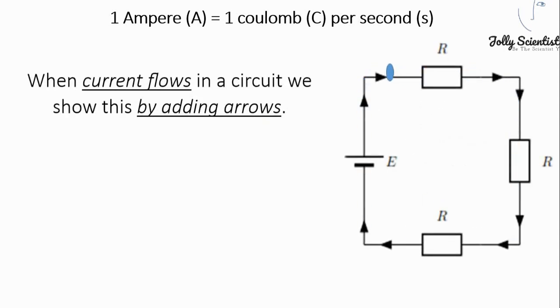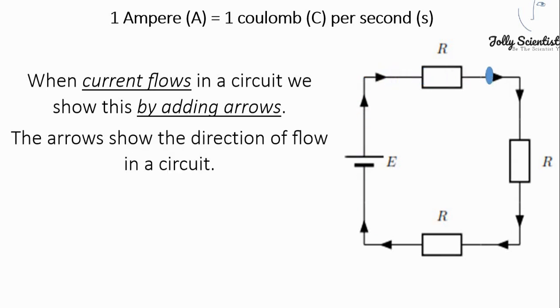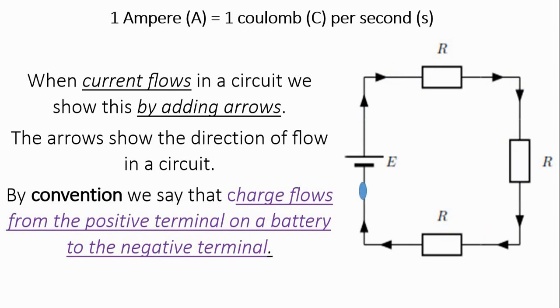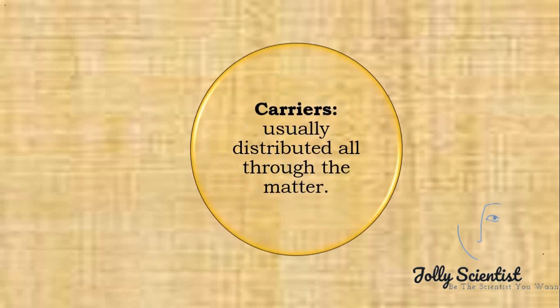When current flows in a circuit, we show this by adding arrows. The arrow shows the direction of flow in a circuit. By convention, we say that the charge flows from positive terminal on the battery to negative terminal. They carry out electricity.